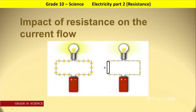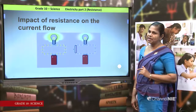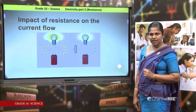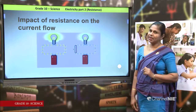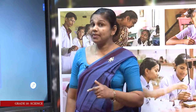In the second circuit, the current flow has decreased and because of that the brightness of the bulb is low. What is the reason? Here you can see there is a resistor connected into the second circuit. That means when there is a resistance in a circuit, current flow decreases. Due to the decrease in current flow, the brightness of the bulb decreases.